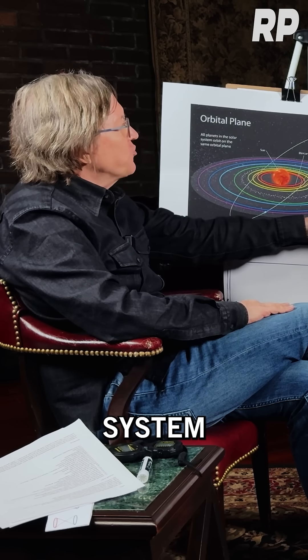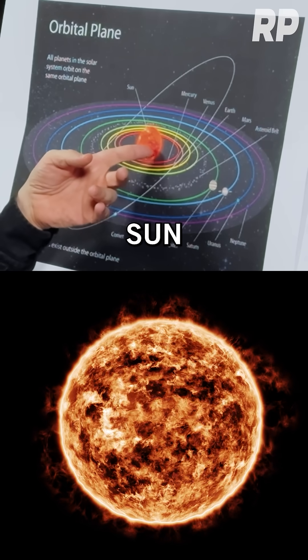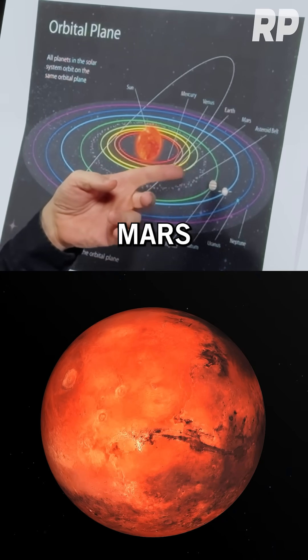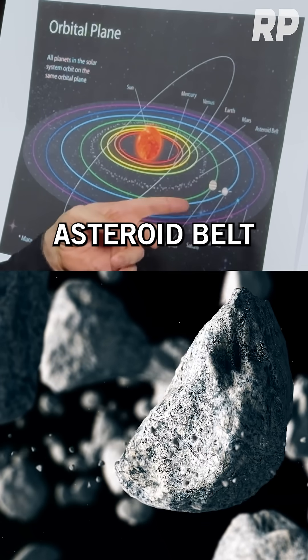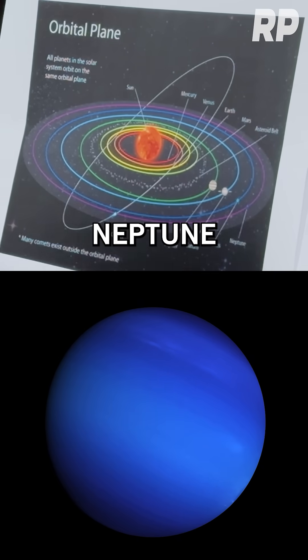And he drew the solar system just like this: Sun, Mercury, Venus, Earth, Mars, Asteroid Belt, Jupiter, Saturn, Uranus, Neptune.